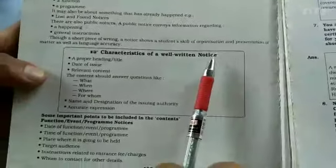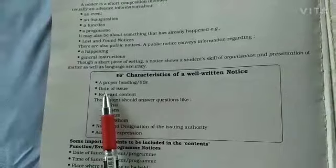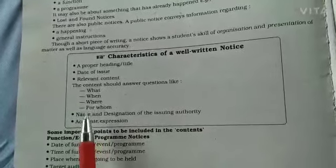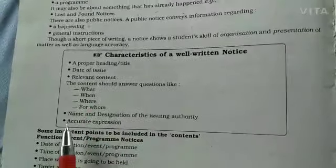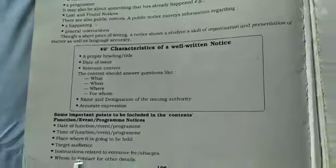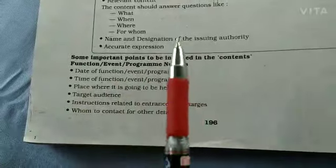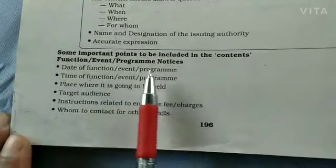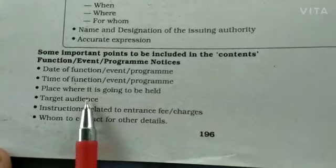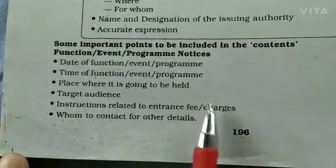There are certain characteristics of a well-written notice. A proper heading is required, a title should be there saying 'Notice,' and it should include a date of issue and relevant content. The content should answer questions like what, when, where, and for whom. It should also include the name and designation of the issuing authority and accurate expressions. Important points to include are: date, time, place of the event, target audience, instructions, entrance fee if any, and whom to contact for details.